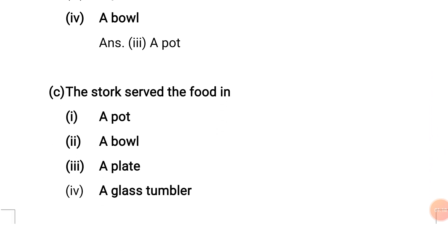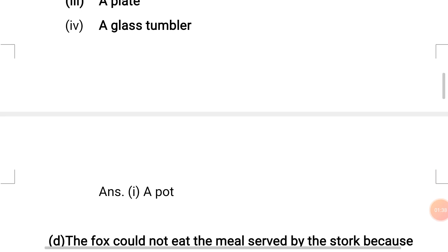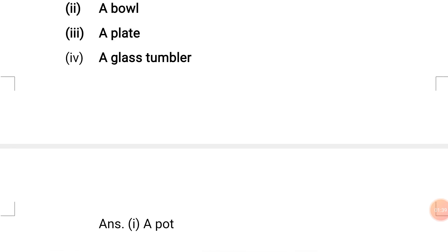Question C: The stork served the food in — options: 1. A pot, 2. A bowl, 3. A plate, 4. A glass. The correct answer is No. 4 — A glass (a tall vessel). The stork served the food in a pot/long-necked vessel.